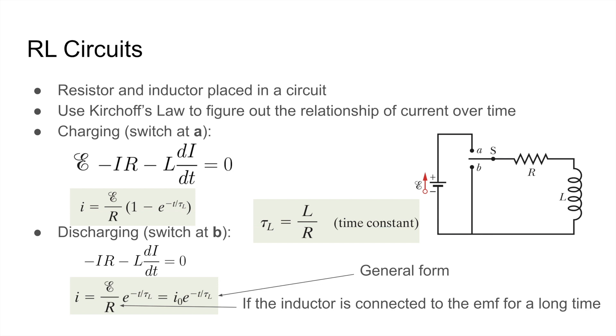However, the general form, if the current starts at I0, is I0 times E to the negative T over the time constant. RL circuits appear frequently, and it's very important to know how to work with them.